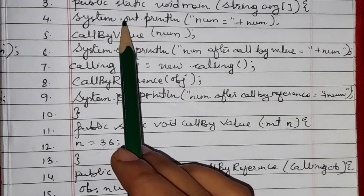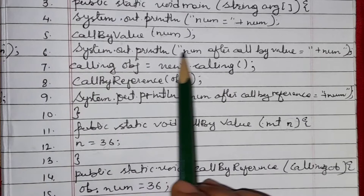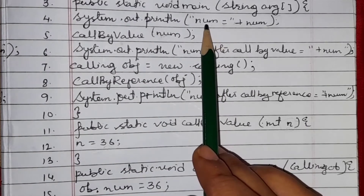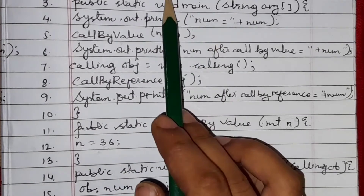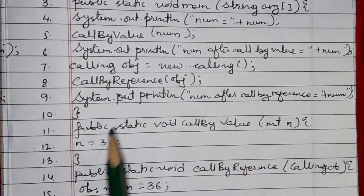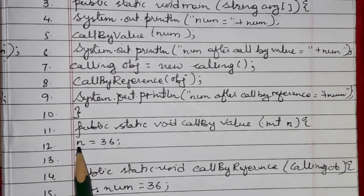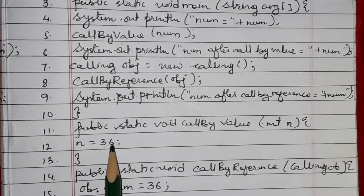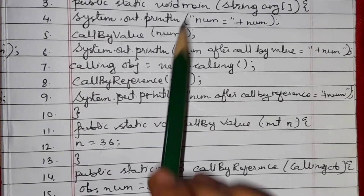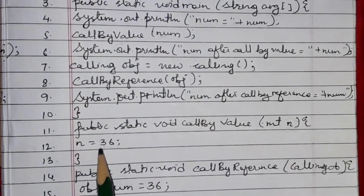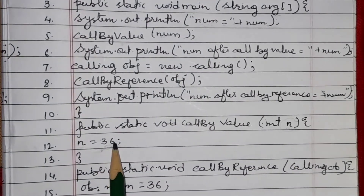When printing after the call by value function, the copied value 'n' has been changed to 36, but the actual value of 'num' remains the same. The copied value is changed, not the actual value.